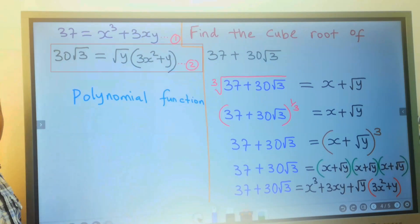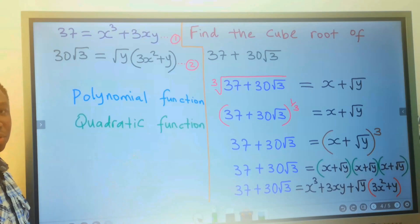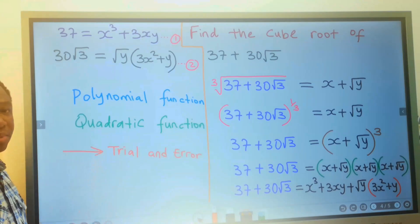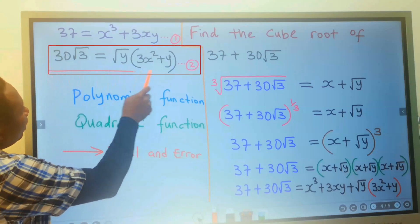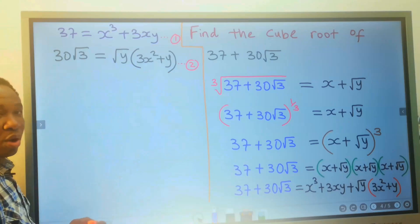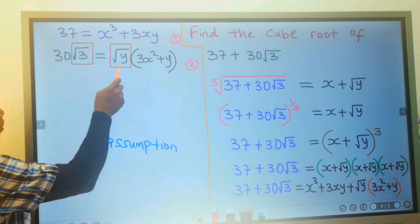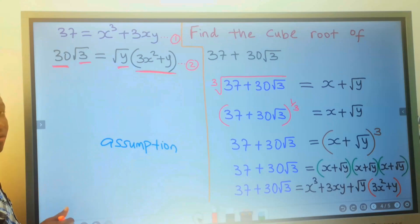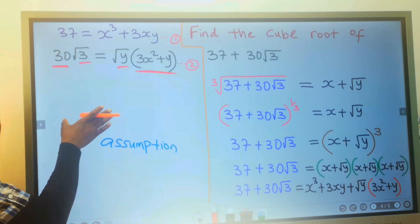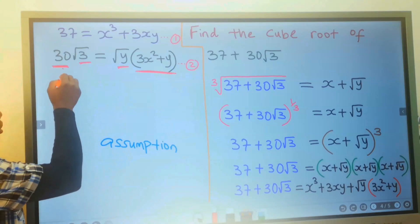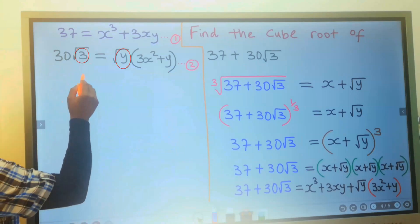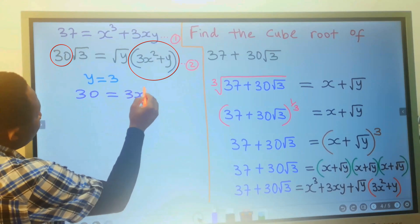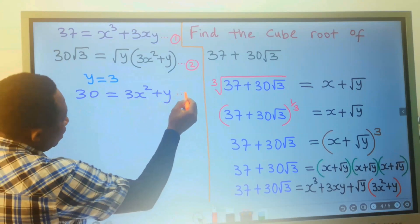To factorize a polynomial function, we usually start with trial and error, but the value we obtain must be accurate. Starting with the quadratic function will be easier, and we're going to start with an assumption. Let y equal 3. Then let 30 equal what is inside the bracket. If our answer is accurate, we accept it; if not, we modify and try again. So y equals 3, and 30 equals 3x squared plus y — call this equation 3.